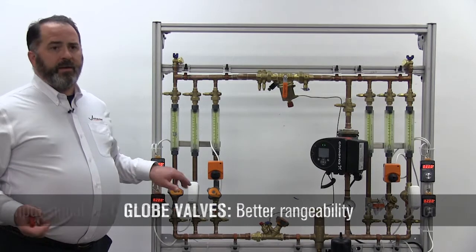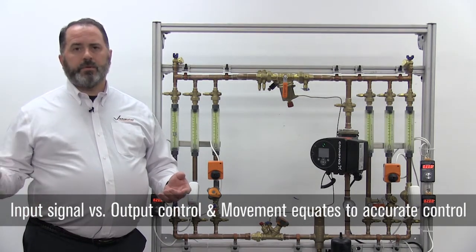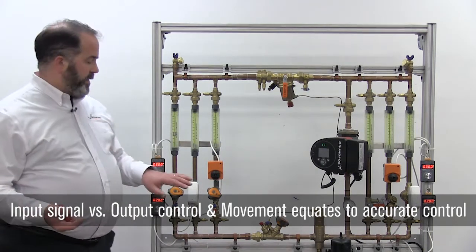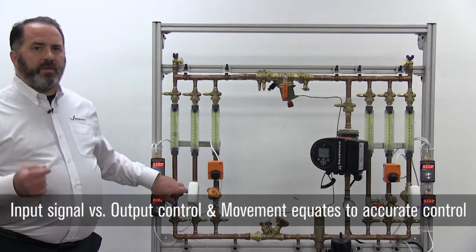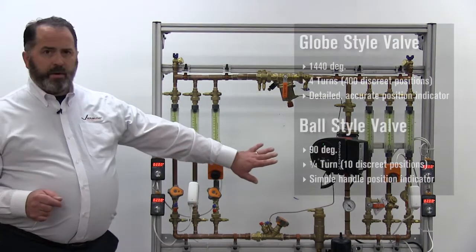This is an angle pattern globe valve. Rangeability is the relationship between output at control to input at control. So the amount of movement I put in the valve has a good relationship to the amount of control I get out of it.